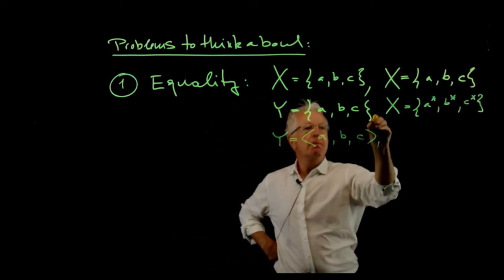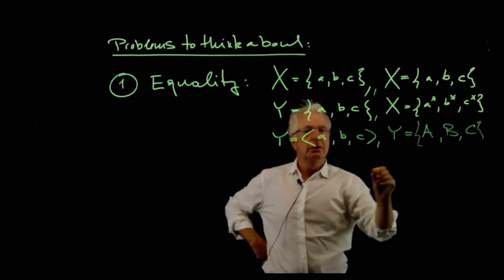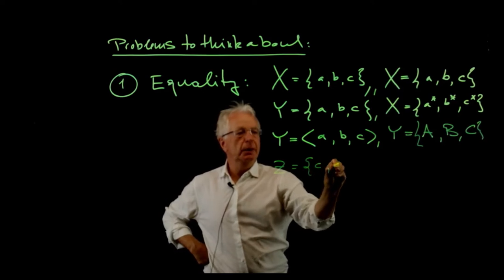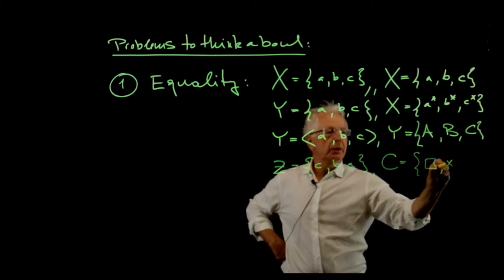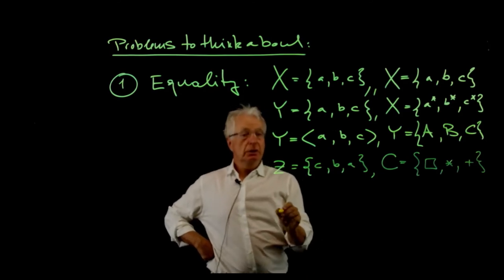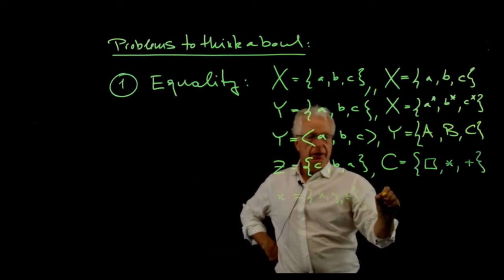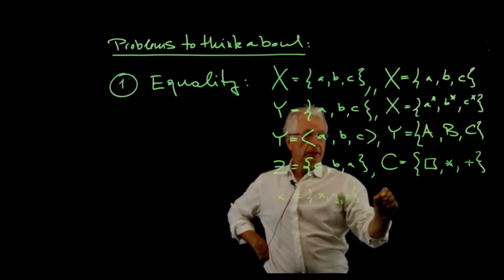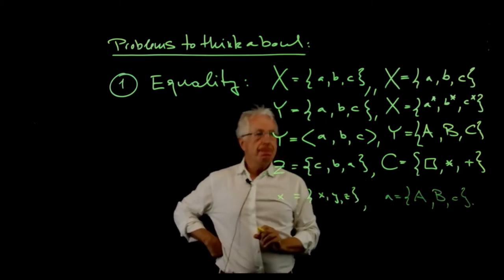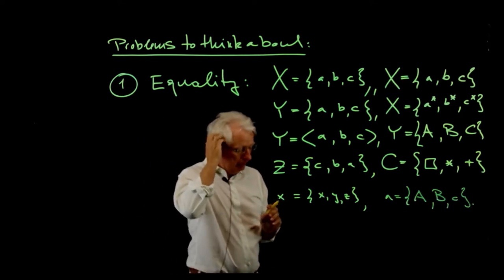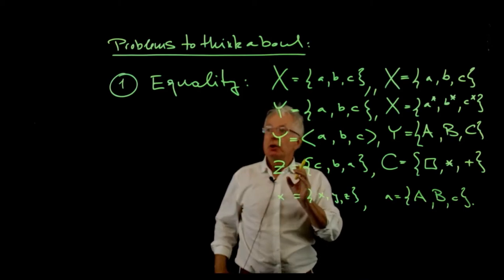We have y equals capital A, B, C; z equals c, d, a; c equals square-star-plus; small x equals x, y, z; and the last one, small a equals a, b, and small c. In first view you would say that's stupid — what do we do here? But there's something deeper behind, and I want to share this background. So what does it mean to be equal?